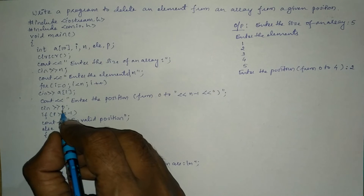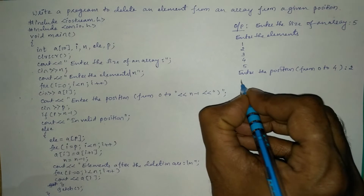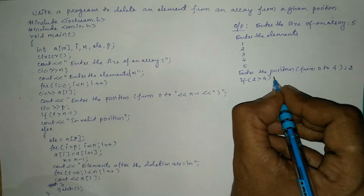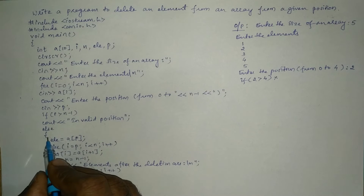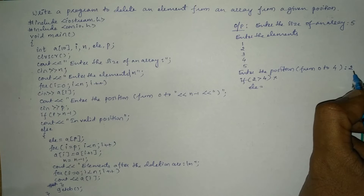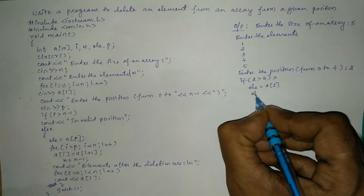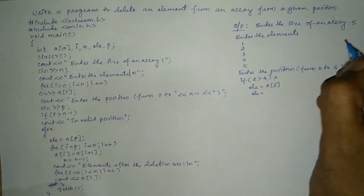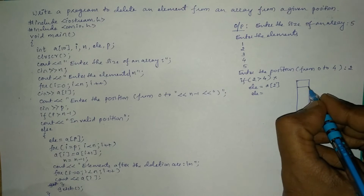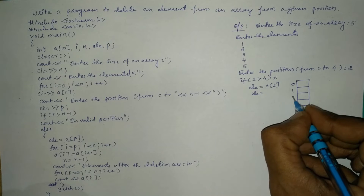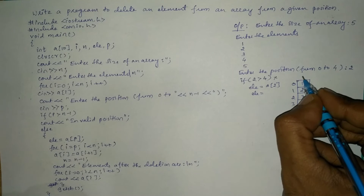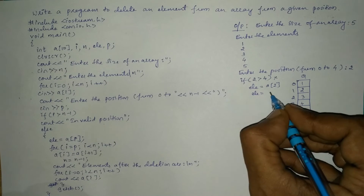We want to delete element 3, which is at position 2, so we type 2. p is now holding value 2. We check: is p (2) greater than n-1 (4)? No, it's false. So control jumps to the else part. element = a[position], so a[2] = 3, meaning element holds 3. In memory we have indices 0 to 4 holding values 1, 2, 3, 4, 5.